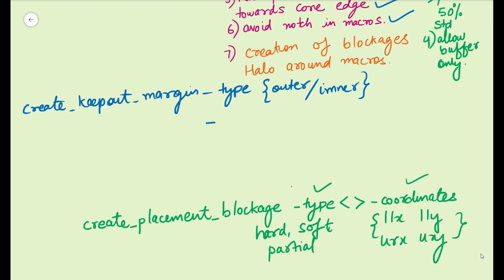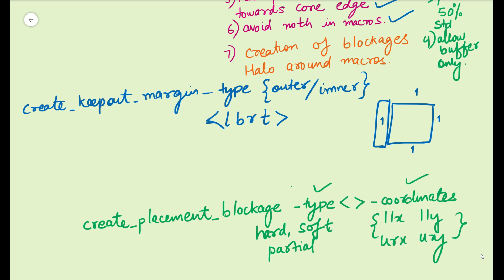After specifying the type, you have to specify the margin values. The order is: left, then bottom, then right, then top. So let's say if you have a cell and you are specifying a keep out margin of one micron everywhere, it will be: left one micron, bottom one micron, right one micron, and top one micron. This is the margin applied over each edge of the cell. You specify the list of cells where you want to apply the margin. If it is a hard margin, that margin will be applied wherever the cell goes — it moves with the cell logically.